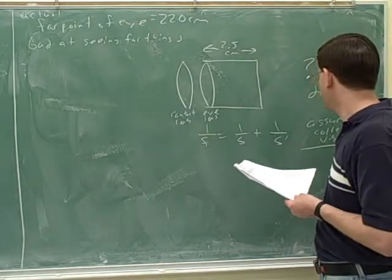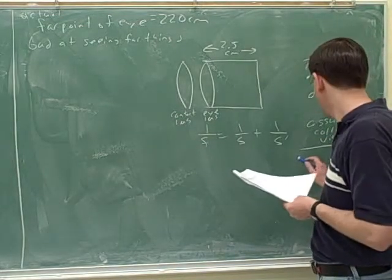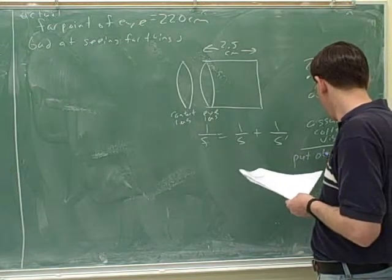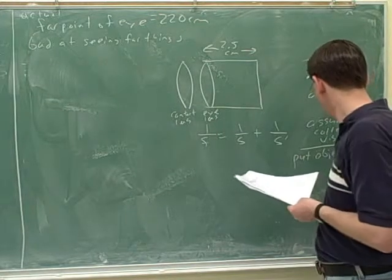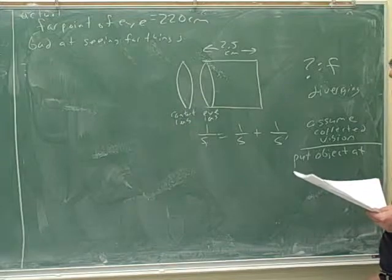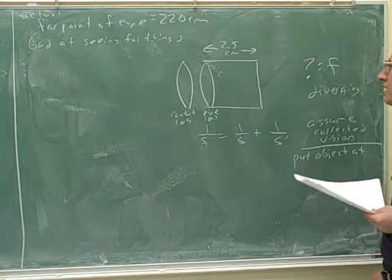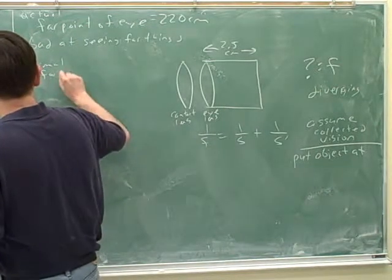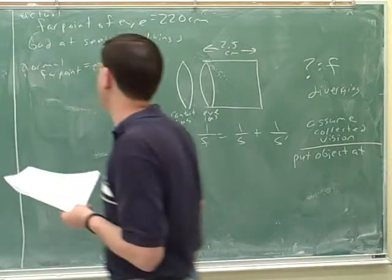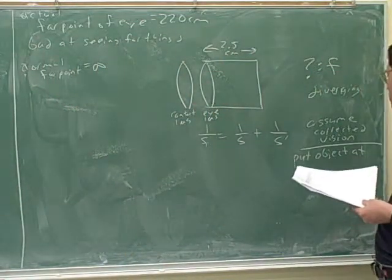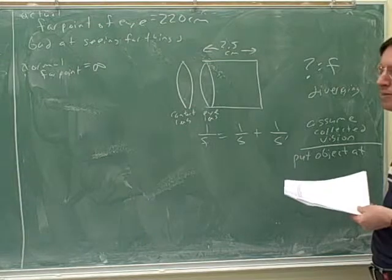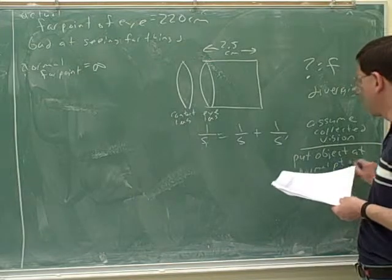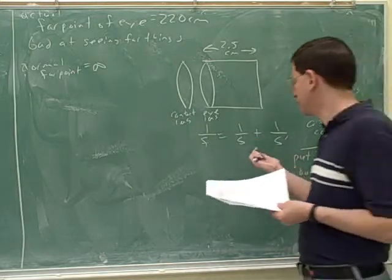So how far can the normal person see? They can see an object where? Is it 25 centimeters? That would be the near point. So far point? Infinity. Yeah, the normal far point is infinity. The normal near point is 25 centimeters, but here we're working with the far point. So we want them to be able to see an object at the normal far point. So we should put the object at the normal far point.